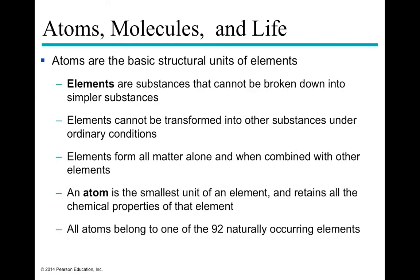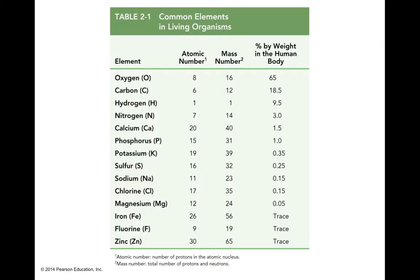Atoms are the smallest unit of an element that retains all the chemical properties of that element. An element is defined as a substance that can't be broken down into anything simpler. Elements under normal conditions cannot be transformed into other substances, and all matter is formed by elements either alone or in combination. We have 92 naturally occurring elements and many more that we can induce artificially.